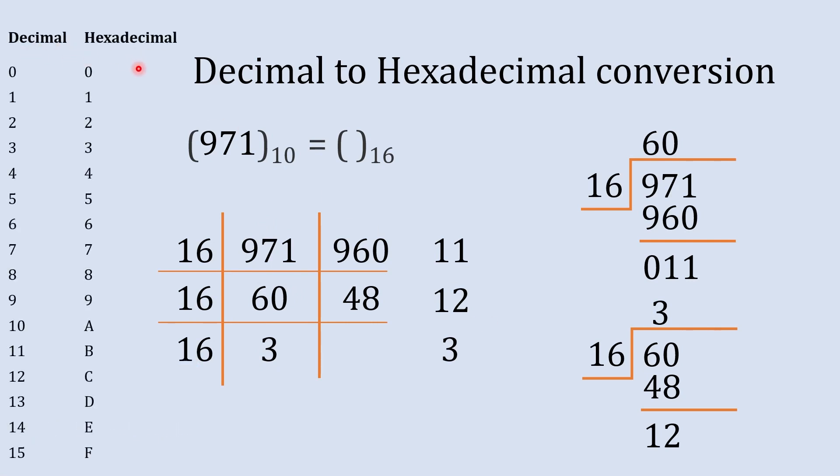Now here we have a table which shows hexadecimal equivalent to decimal number. Now there is no such number as 11 in hexadecimal, but instead of that there is some equivalent digit to 11. So equivalent of 11 is B in hexadecimal, equivalent of 12 is C in hexadecimal and 3 is as it is.